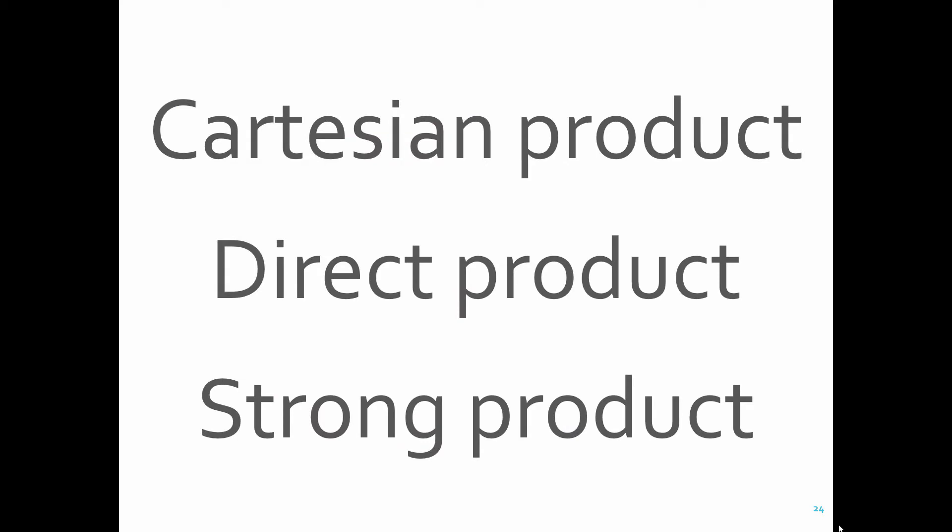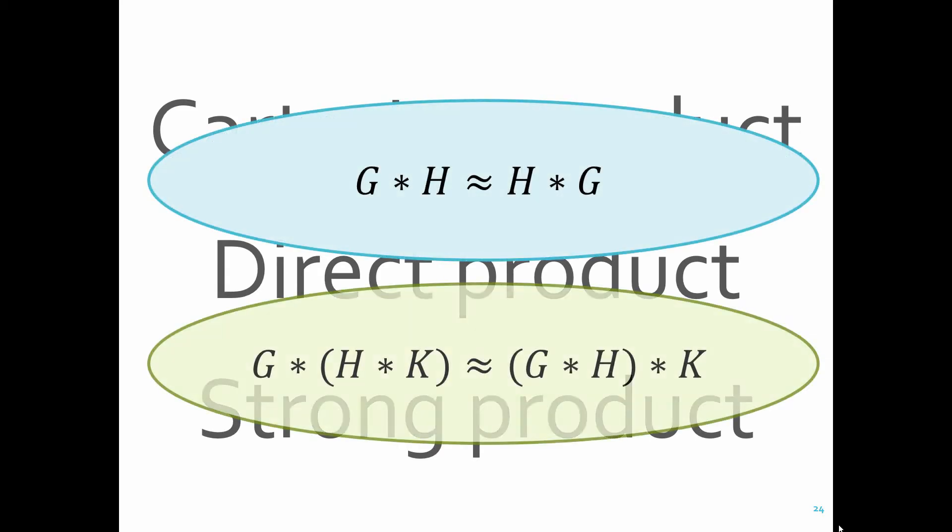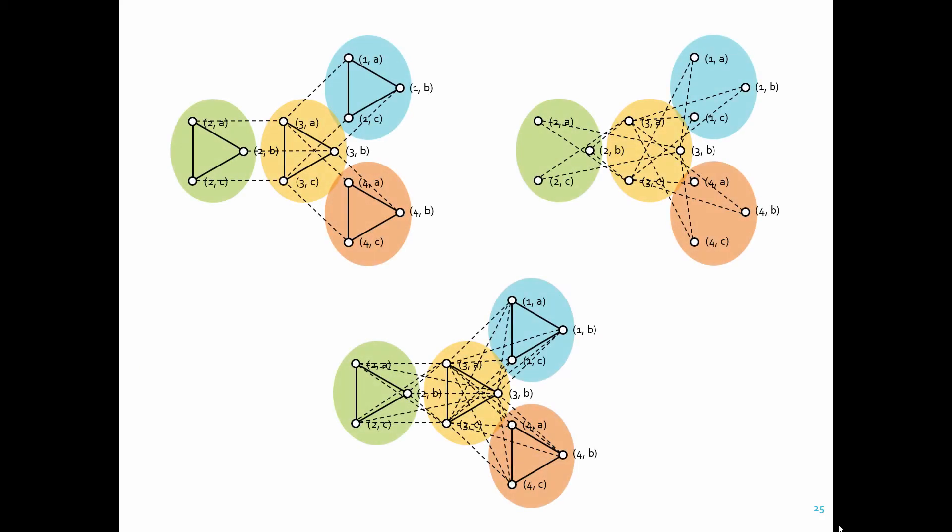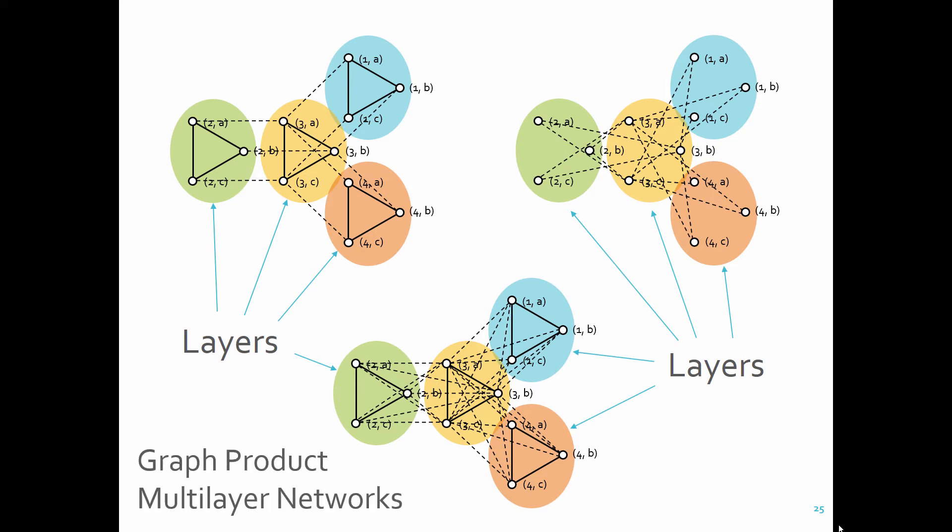These three graph product operations are all commutative and associative. They all create a network of networks, quote-unquote. So, as I said before, you can consider each of the sub-networks as a layer, and then the resulting graph product can be understood as a graph product multi-layer network. It can be used as a mathematically elegant way to construct certain types of multi-layer networks.